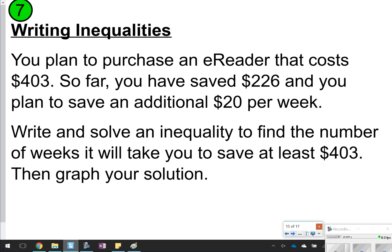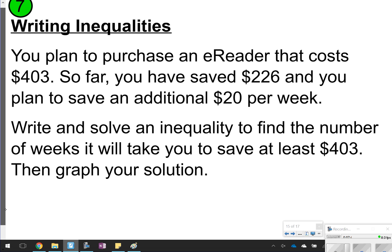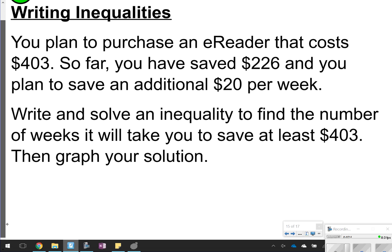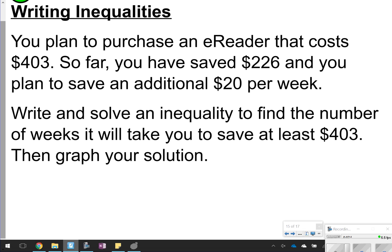The last one is number 7, and I want to just read this with you and we can work this out together. It says, you plan to purchase an e-reader that costs $403. So far, you have saved $226, and you plan to save an additional $20 per week. Maybe 20x. Write and solve an inequality to find the number of weeks it will take you to save at least $403.